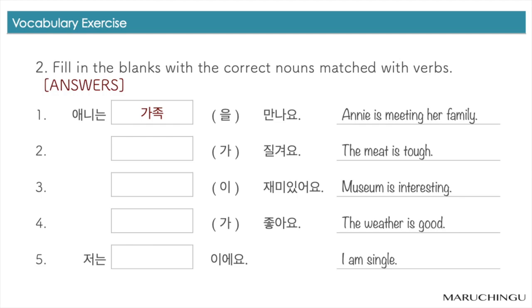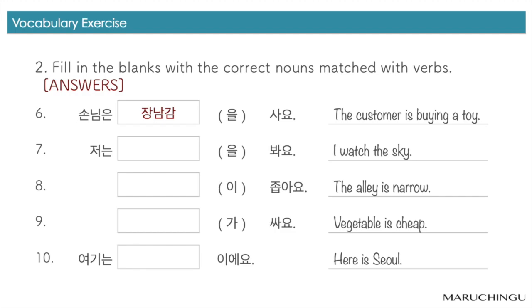1번. 애니는 가족을 만나요. 2. 고기가 질겨요. 3. 박물관이 재미있어요. 4. 날씨가 좋아요. 5. 저는 미혼이에요. 6. 손님은 장난감을 사요. 7. 저는 하늘을 봐요. 8. 골목길이 좁아요. 9. 채소가 싸요. 10. 여기는 서울이에요.